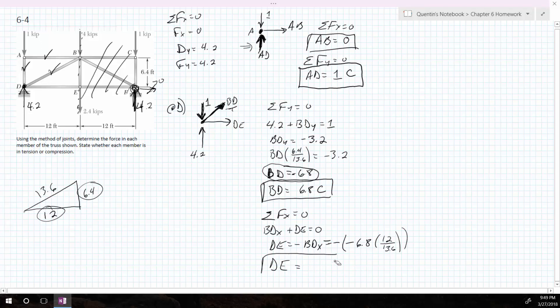Okay. It's equal to 6. So the plus sign just tells me that I drew it correctly. And I drew it where it's pulling away from that point. So therefore, it is in tension.